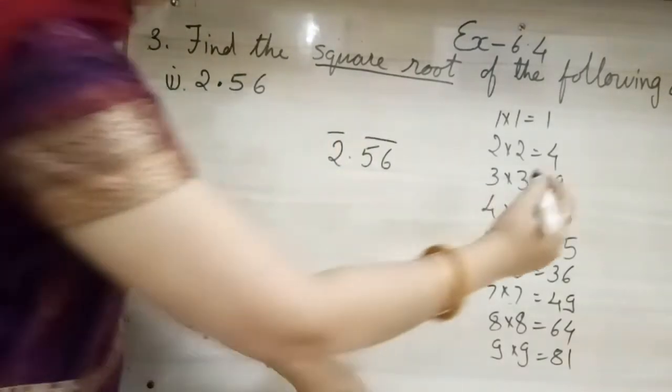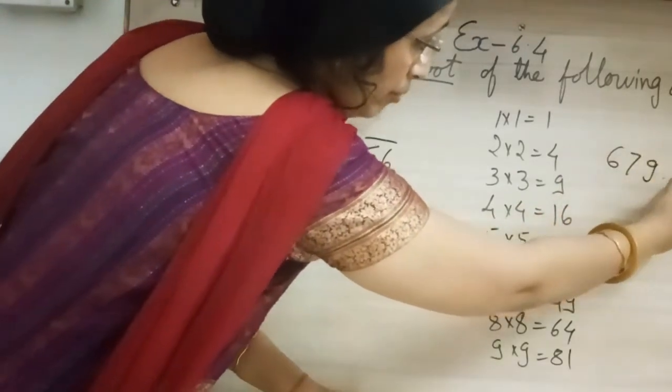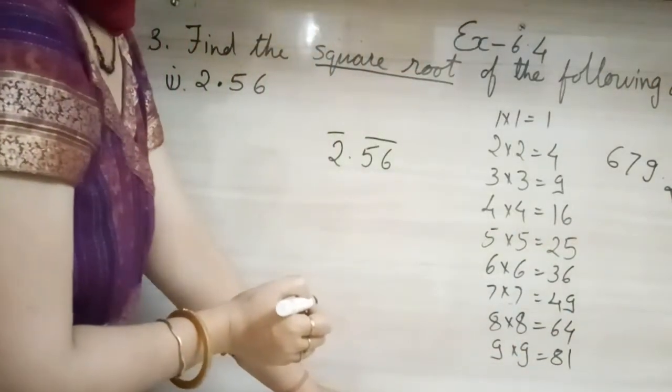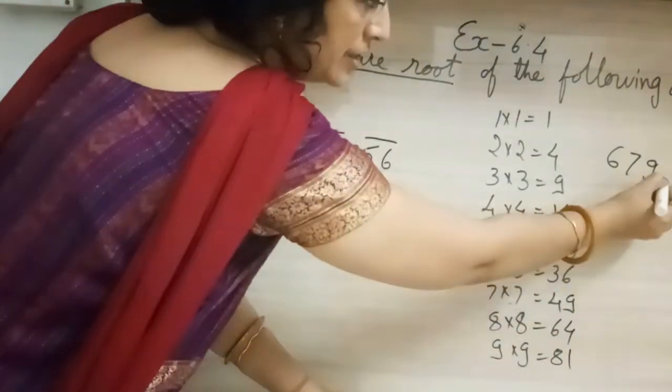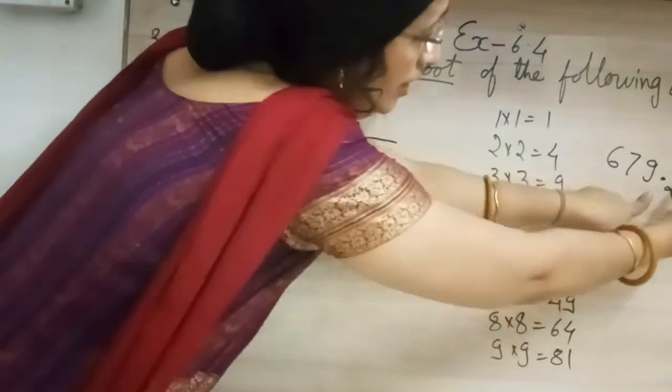I will give one more example, just 679.253. So we will assume this center. Now what we will do?